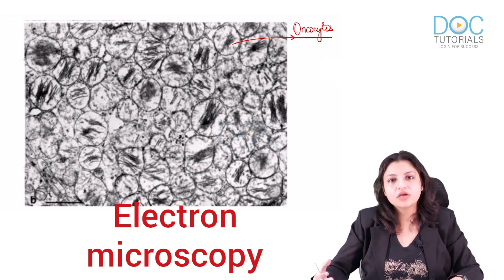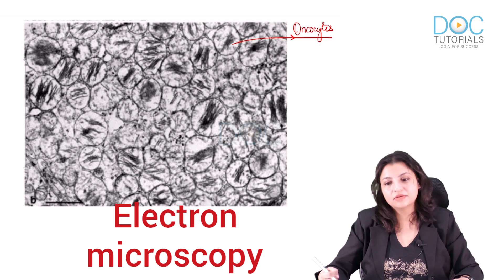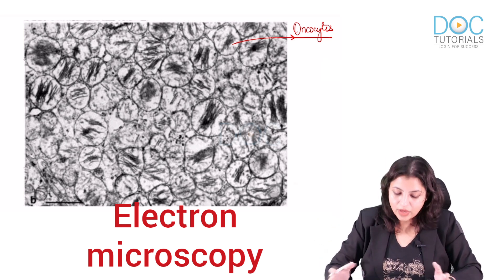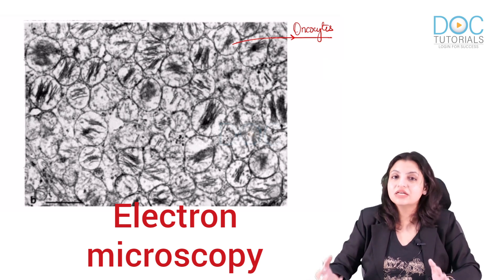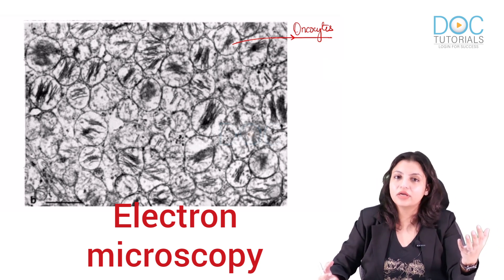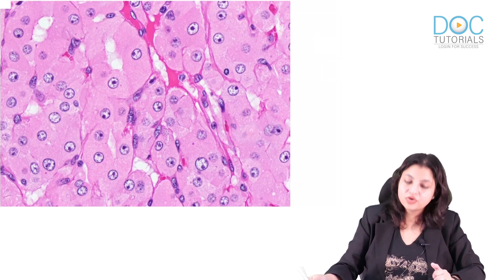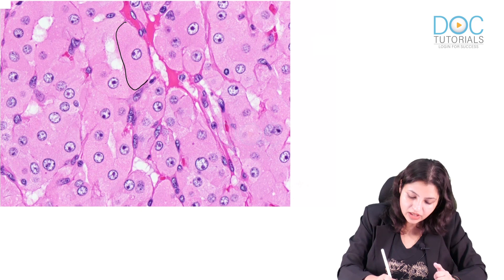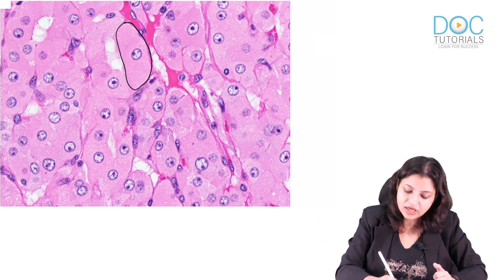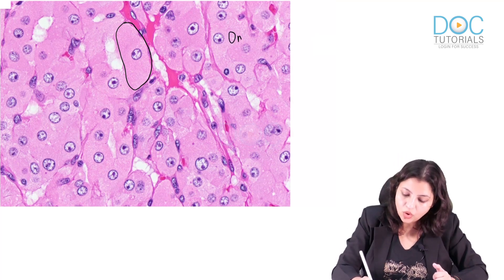Oncocytes are cells which have a lot of mitochondria in them. Organs which require a lot of energy have oncocytes — for example, muscle. From a pathology perspective, whenever a cell has a lot of mitochondria (oncocytes), these cells start acquiring abundant pink cytoplasm. You can see this cell has acquired abundant pink cytoplasm. Such cells which have abundant pink cytoplasm are called oncocytes.